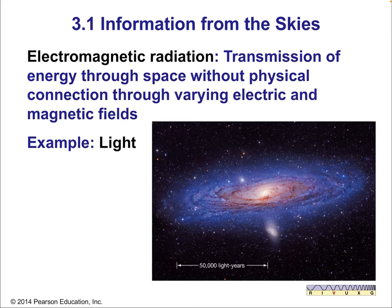Information from the skies: electromagnetic radiation is the transmission of energy through space without any physical connection, through varying electric and magnetic fields. Light is a form of electromagnetic radiation.